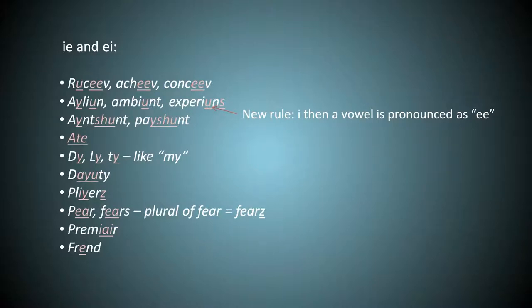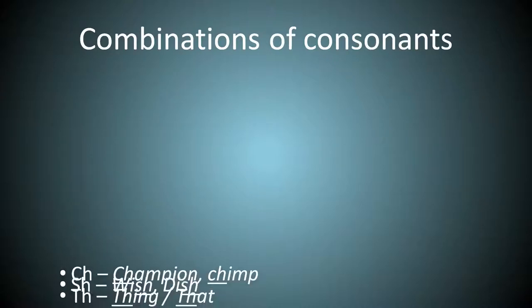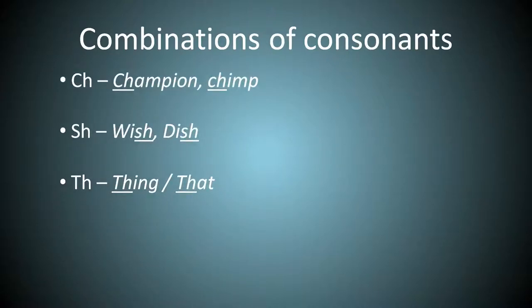Combinations of consonants. This is just listing rules that already exist. CH, SH, TH. TH represents two sounds. TH in thing and TH in that. And here is a combination I create later because there is no way to represent it.